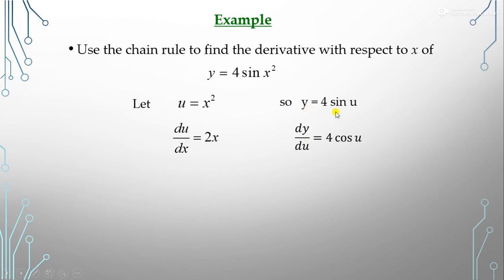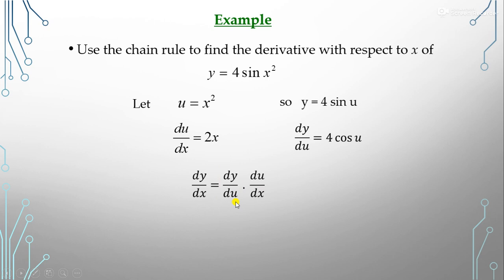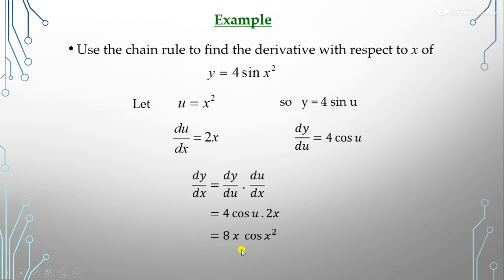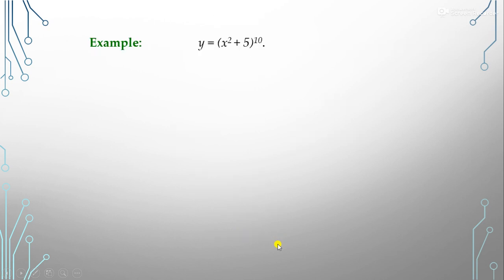The derivative of sin(u) is cos(u), so dy/du = 4cos(u). By the chain rule, dy/dx = dy/du × du/dx = 4cos(u) × 2x = 8x·cos(u). Substituting back u = x², we get dy/dx = 8x·cos(x²).